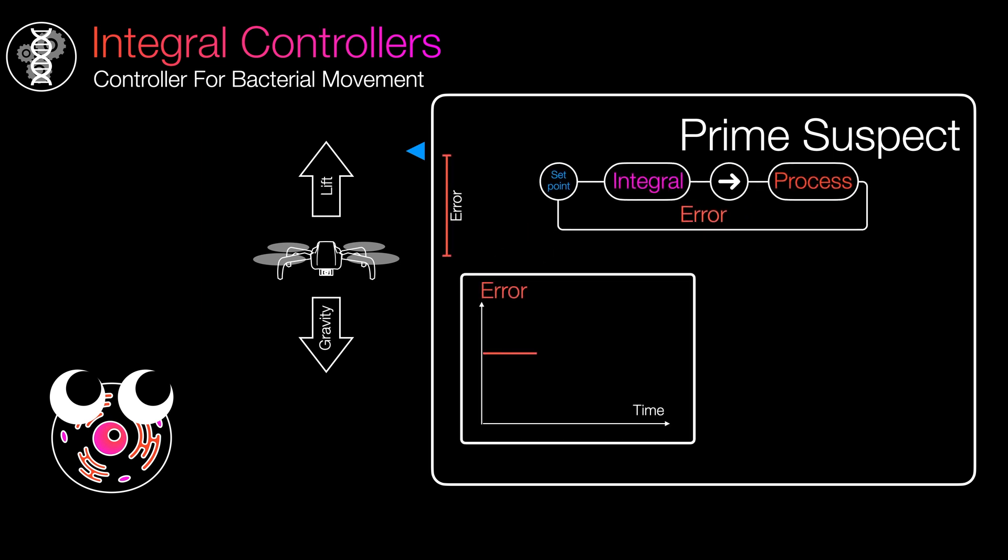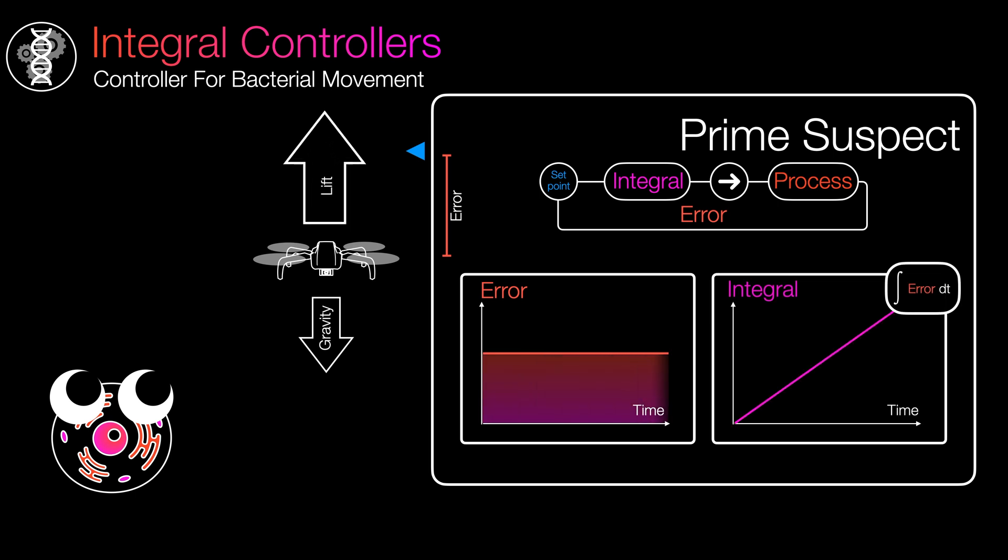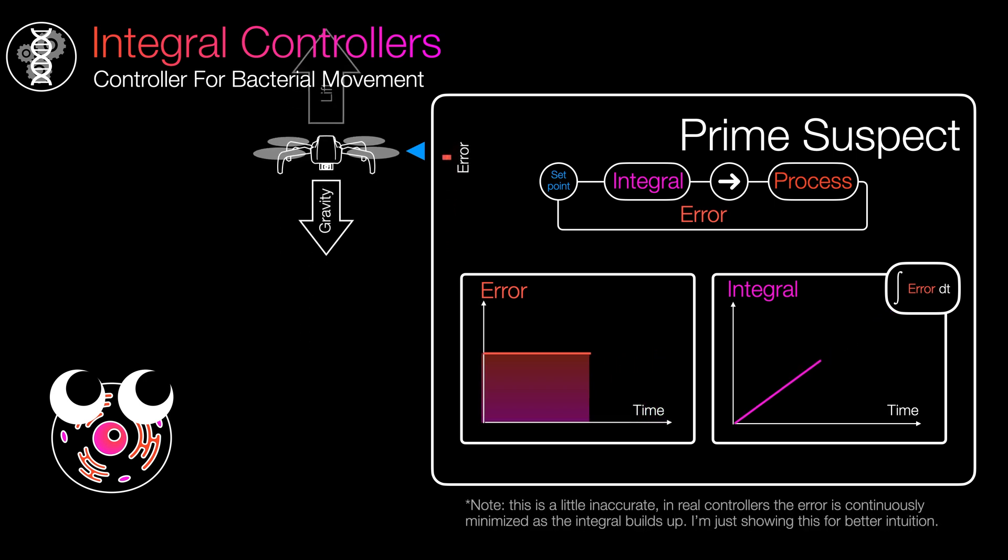If we were to plot the distance to the target over time, most controllers would simply see a flat line and consider the job done. But not the integral controller. It takes the area under that flat line and accumulates it, translating that accumulation into the motor's effort. The accumulation eventually builds up, allowing the motor to break free from the trap.